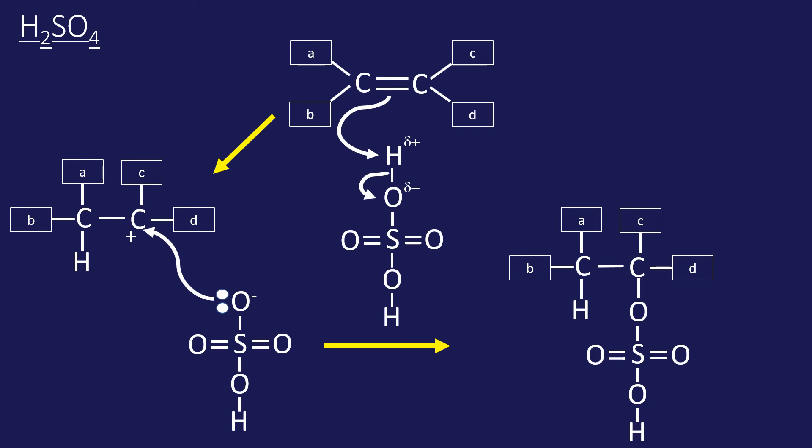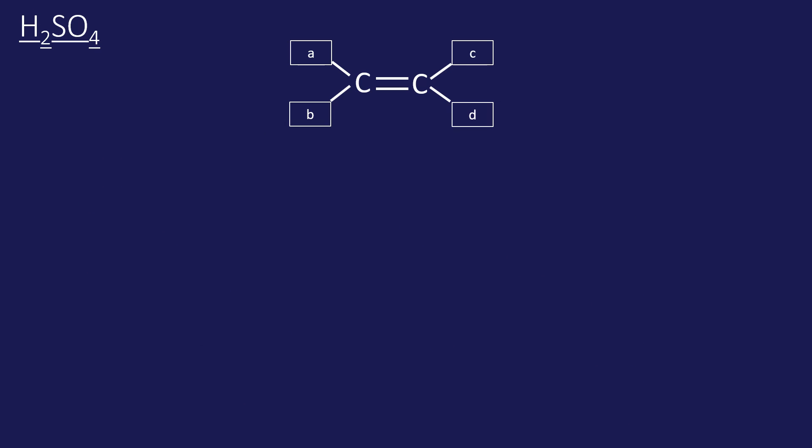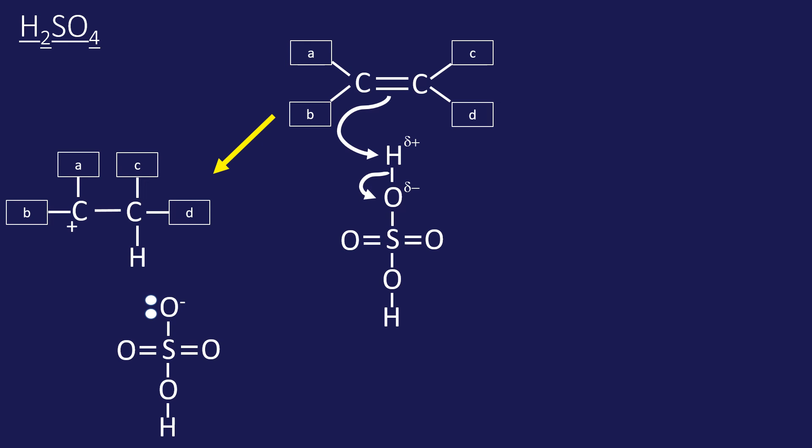Same as HBr, we get two possible outcomes here because we could have had the carbocation on the left instead of the right, and then it's just the other product. Just the same thing, just in a different position. So we've got a position isomer here.